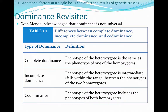The second type is incomplete dominance, where the phenotype of the heterozygote is actually an intermediate phenotype — it falls within a range of the two major phenotypes. Codominance is the third type of dominance, where the phenotype of the heterozygote actually includes the phenotype of both homozygotes.